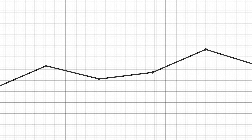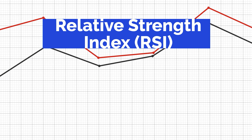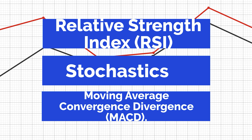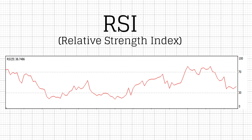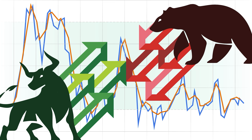The most common oscillators are the Relative Strength Index (RSI), Stochastics, and Moving Average Convergence Divergence (MACD). The RSI, a leading oscillator, gives technical traders signals about bullish and bearish price movements. It is commonly plotted below the graph of an asset's price.